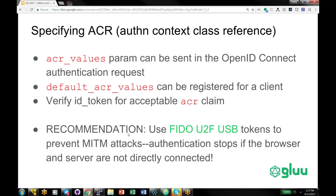Some other things you can do to increase security: use the ACR values parameter to specify a certain authentication workflow, and you can also use default ACR values in the client registration metadata to see what happened at authentication time. Another recommendation is to use FIDO U2F USB tokens — because they're used through a browser plugin or natively in the browser, they also prevent man-in-the-middle attacks. If you can get your users to adopt FIDO U2F USB, it's really helpful.